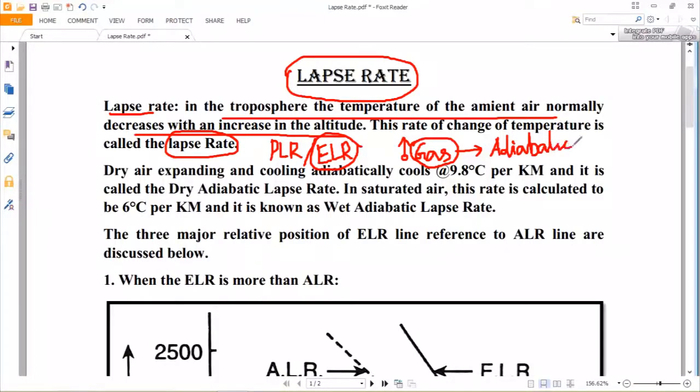Now there are two types of adiabatic lapse rate depending on the condition of the environment—whether the environment is dry or wet. Depending on the dry and wet condition, the lapse rates are known as dry adiabatic lapse rate and wet adiabatic lapse rate. The value of the dry adiabatic lapse rate is 9.8°C per kilometer, and the value of wet adiabatic lapse rate is 6°C per kilometer.